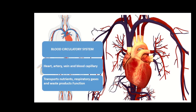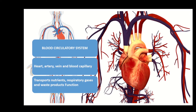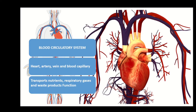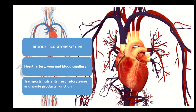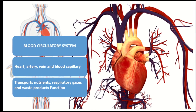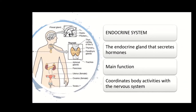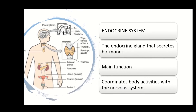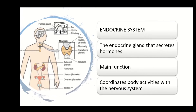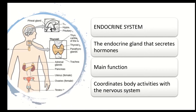The blood circulation system consists of the heart, arteries, veins, and blood capillaries. The function is to transport nutrients, respiratory gases, and waste products. The endocrine system consists of glands that secrete hormones, and its main function is to coordinate body activities together with the nervous system.